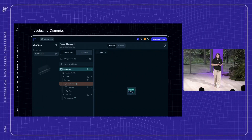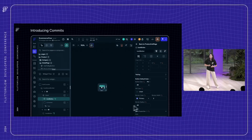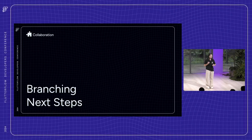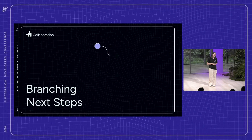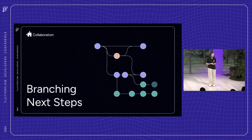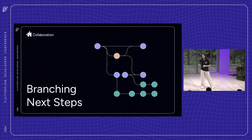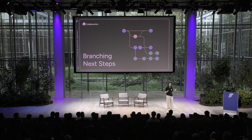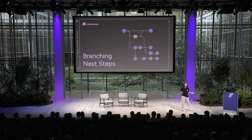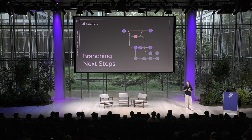We're really excited about commits and we think it's going to be a big improvement to branching. But we're all about full transparency here, and we know that branching really isn't where it needs to be in terms of the overall user experience with FlutterFlow. I've talked to a lot of users, and people have raised concerns about a sometimes confusing user experience or even inaccurate merges in some cases.